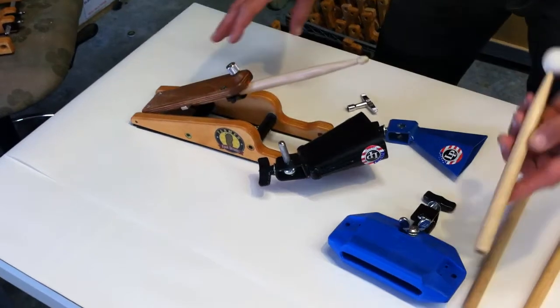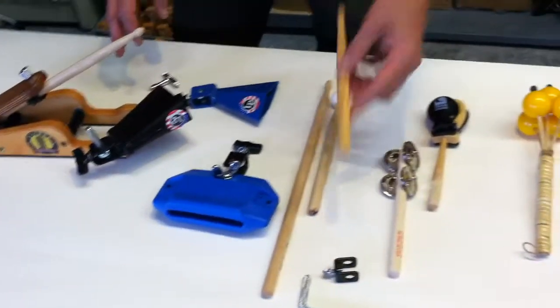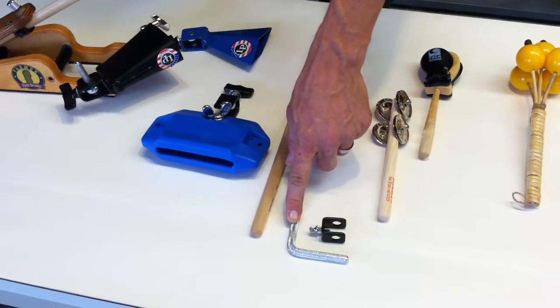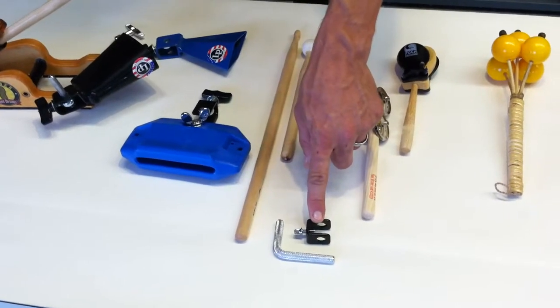There are also felt beaters, shorter sticks, and the separate add-on items are the LP percussion post and the clamp that holds it.